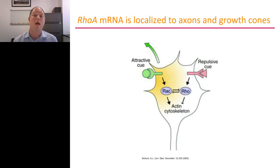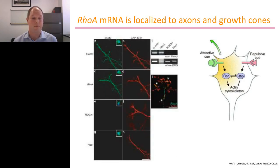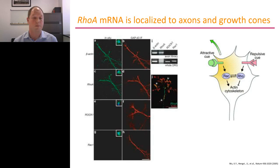At this time, we started investigating which mRNAs might be locally translated. Based on the growth cone collapse and retraction phenotype, we speculated that a small GTPase might be involved, and we focused on RhoA. Using in situ hybridization, meaning staining specific for mRNA, we could identify that both beta-actin and RhoA were heavily localized to axons. GAP43 is a counter staining, whereas ROCK or WASP mRNAs were totally absent. The same result was seen by RT-PCR on axonal or whole cell libraries.